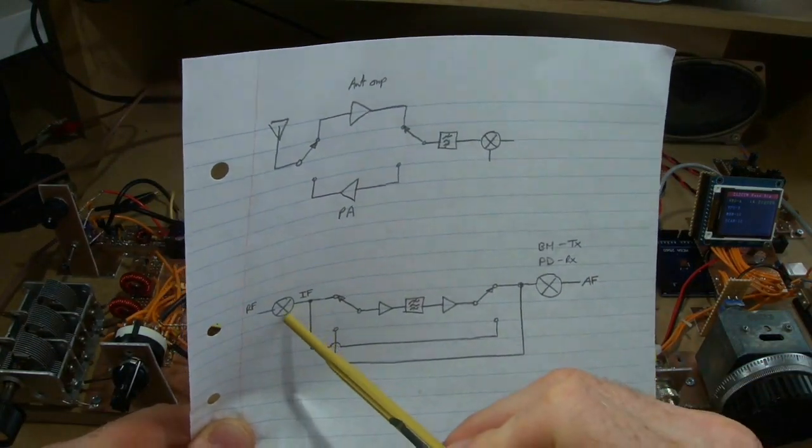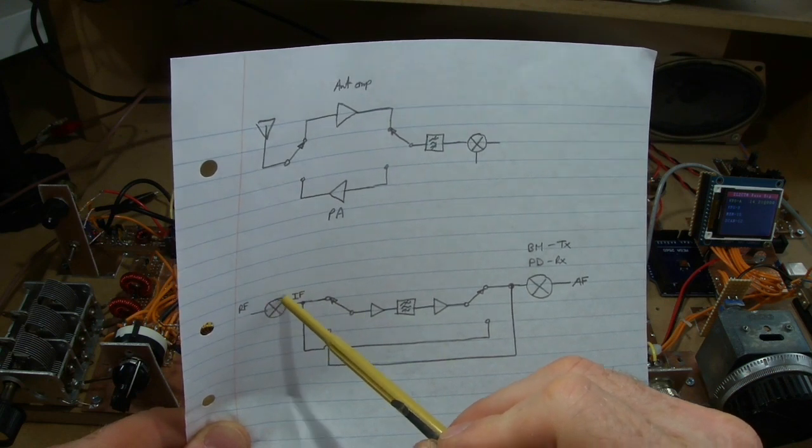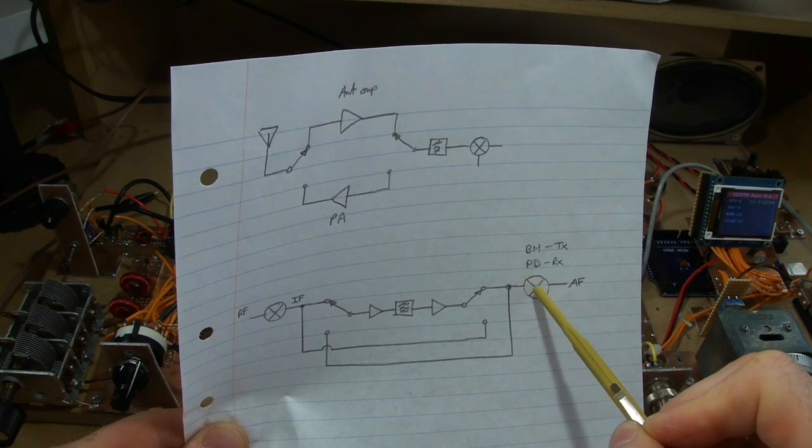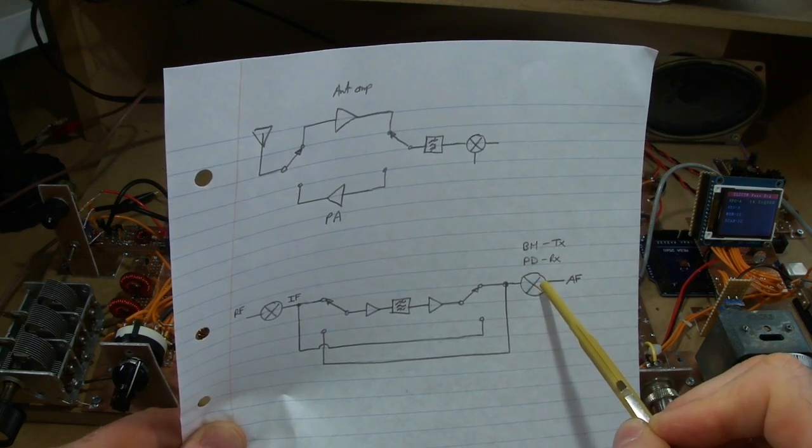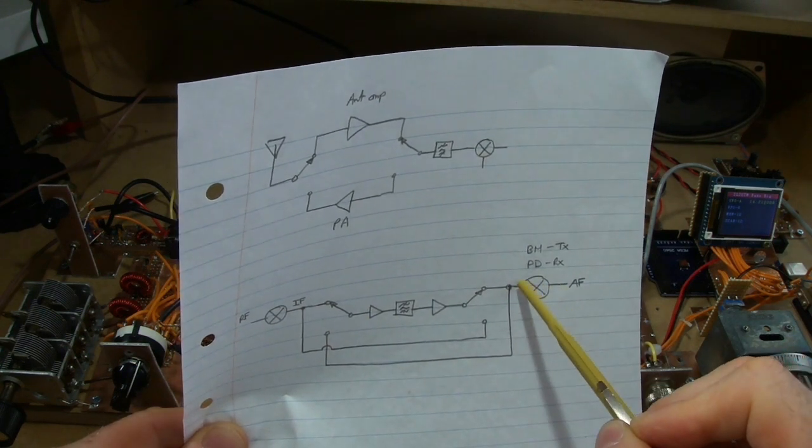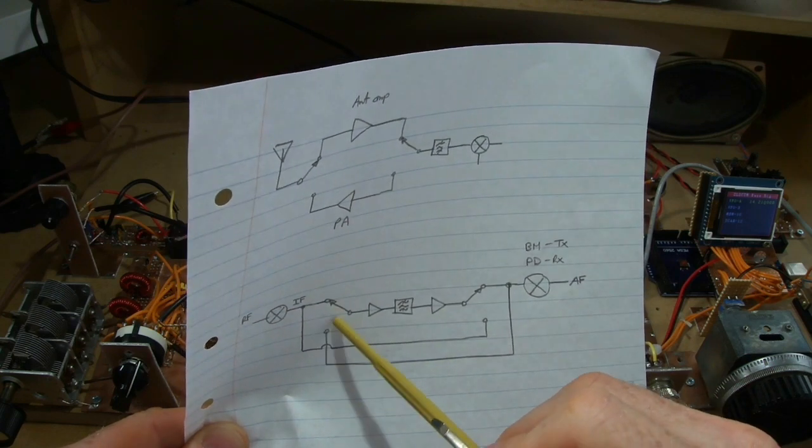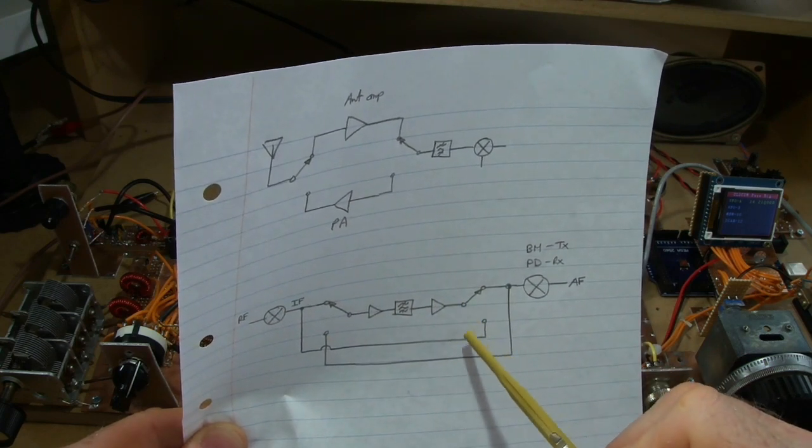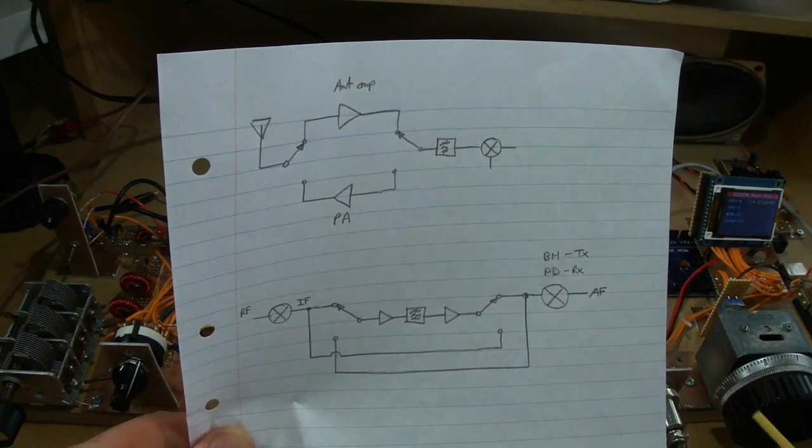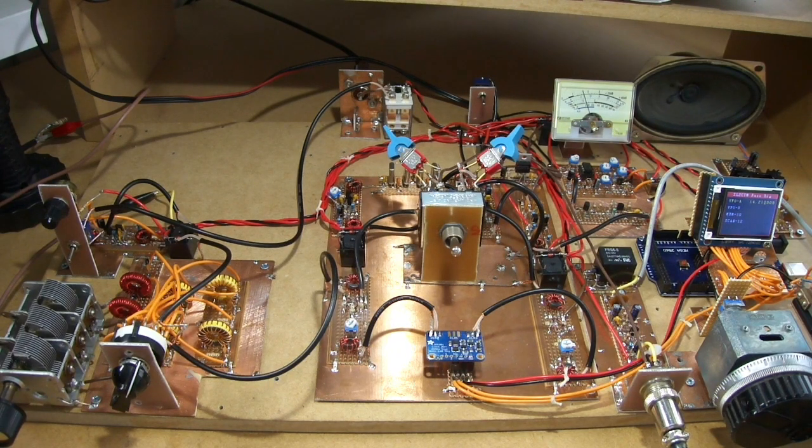So on receive, our RF would come in, we mixed with the VFO, our IF would come out through the amp, back through and into our product detector on the receive side. On transmit, the relays would toggle over and then our IF coming out of the balance modulator would then be fed around, back through, out the side and back out through the mixer where it's mixed up to our desired RF. And we'll look to see how effective that is.